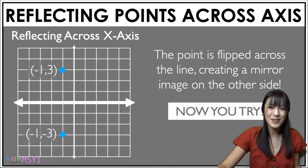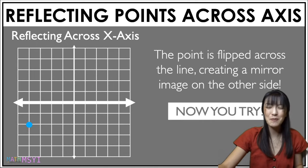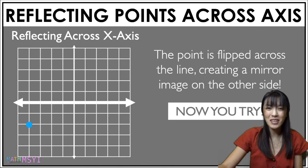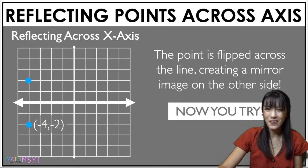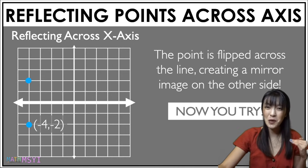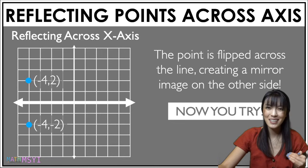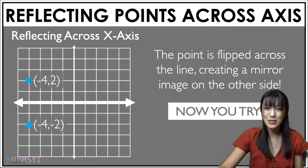How are you doing so far? Let's keep going. Go ahead and put your finger where you think this point will be reflected to. Did you get that? Think about the coordinates — the new coordinates will be negative 4, 2.